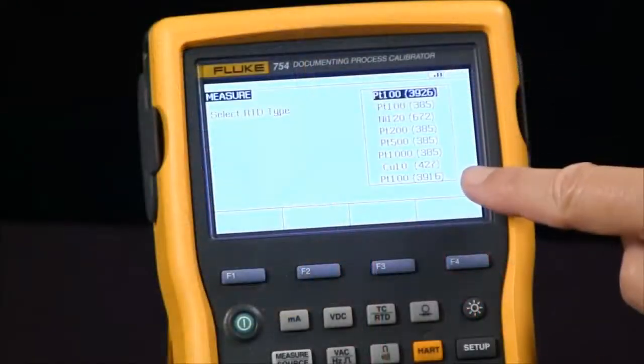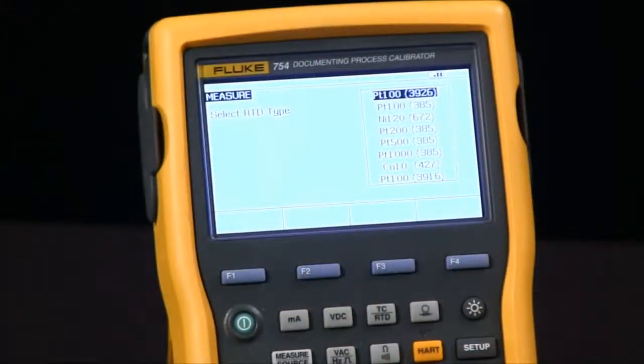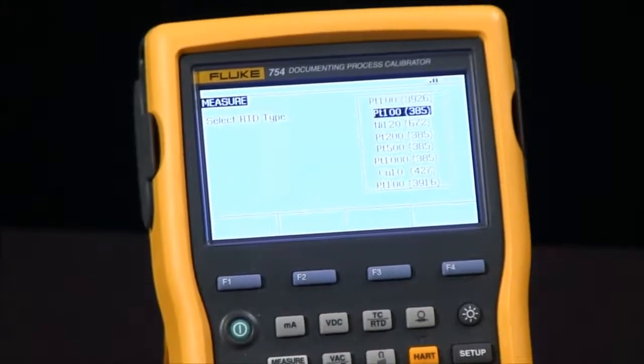And then we get a choice of different types of RTDs. Now I'm going to select Platinum 100 ohm.